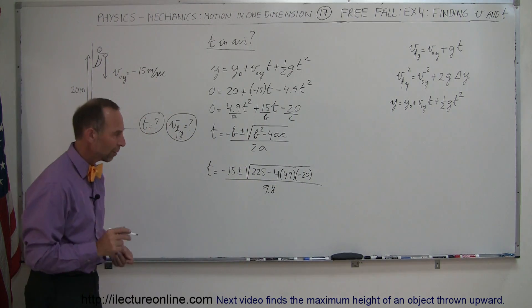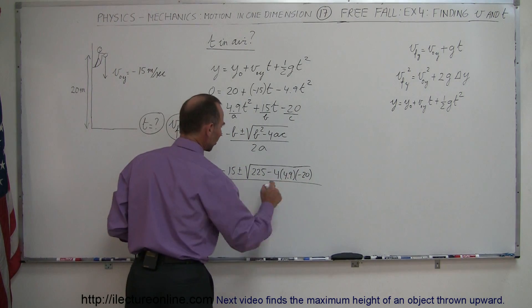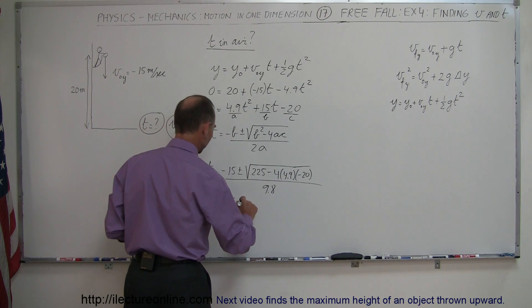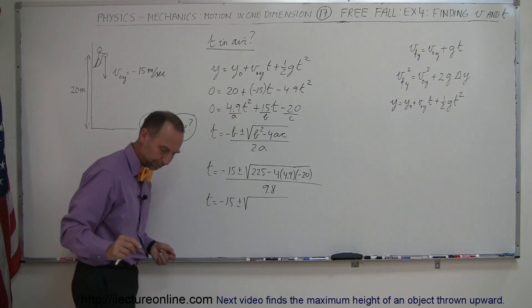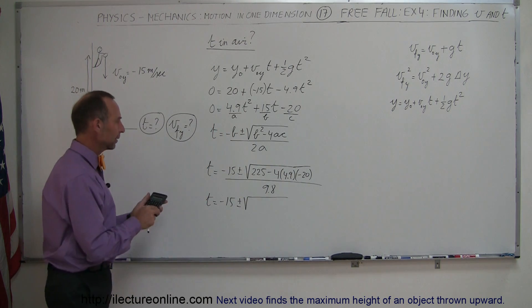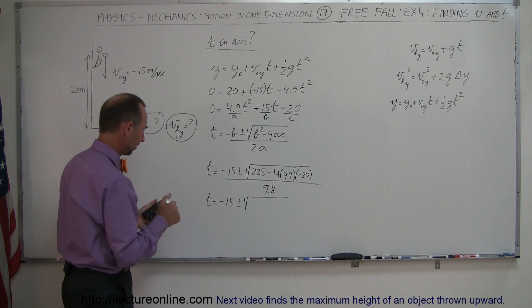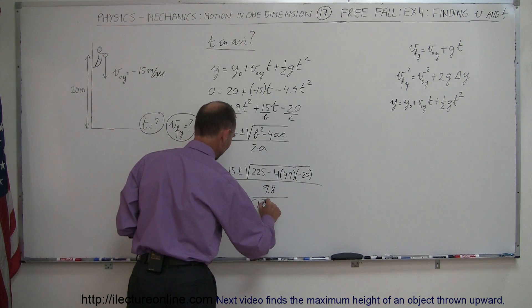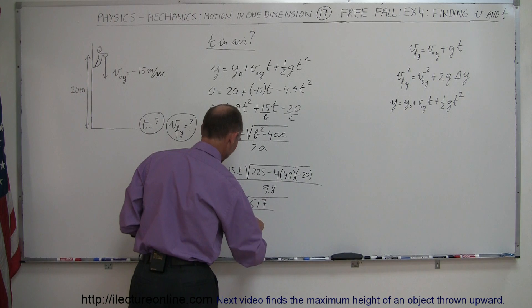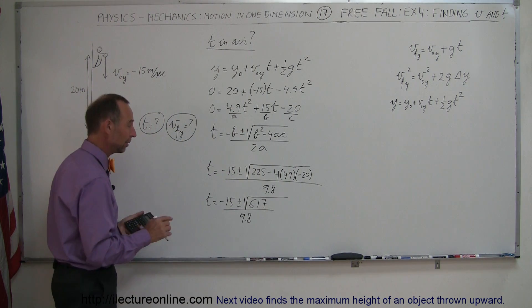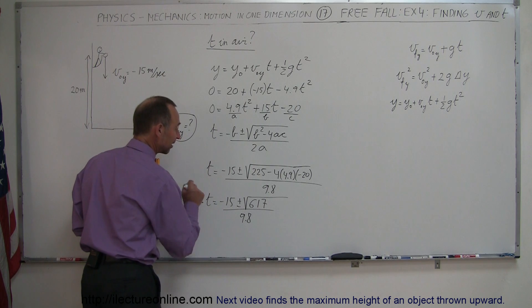We can go ahead and simplify that a little bit, multiply these numbers together, that is 392, so this is t is equal to minus 15 plus or minus the square root of the calculator, so that would be 392 plus 225, that's 617, that's the same as before, divided by 9.8. So we get the exact same equations within the previous example, except this is now a negative instead of a positive.